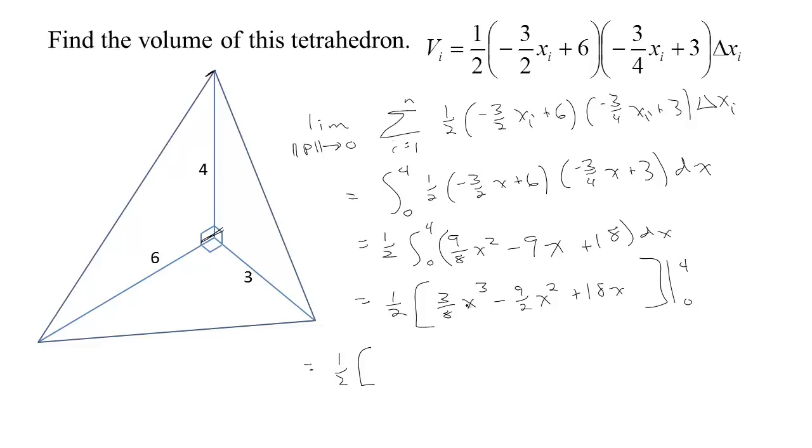We have, if we plug in 4, we have 4 cubed. That's 64. But 64 divided by 8 is 8. And 3 times 8 is 24. So we have 24. Put a 4 here. We have 16. But half of 16 is 8. 9 times 8 is 72. So we have 24 minus 72. And then we have 4 times 18 which is actually 72 as well minus 1/2 times, well, when we plug in 0, we get 0 minus 0 plus 0. So we have 1/2 of 24. The 72's cancel. And so we have a volume of 12. The volume is 12.